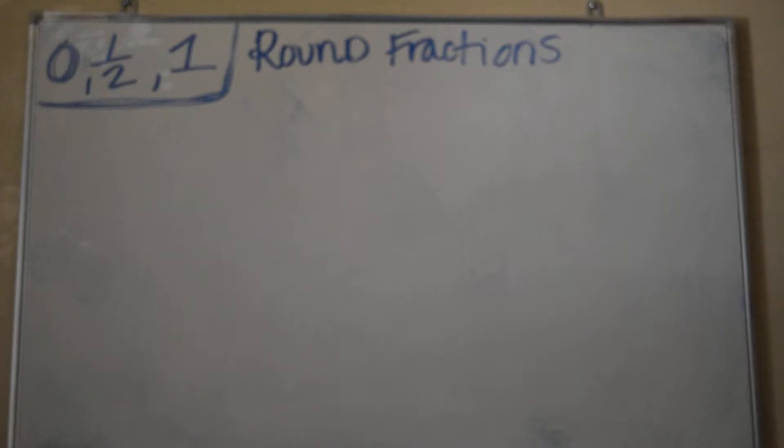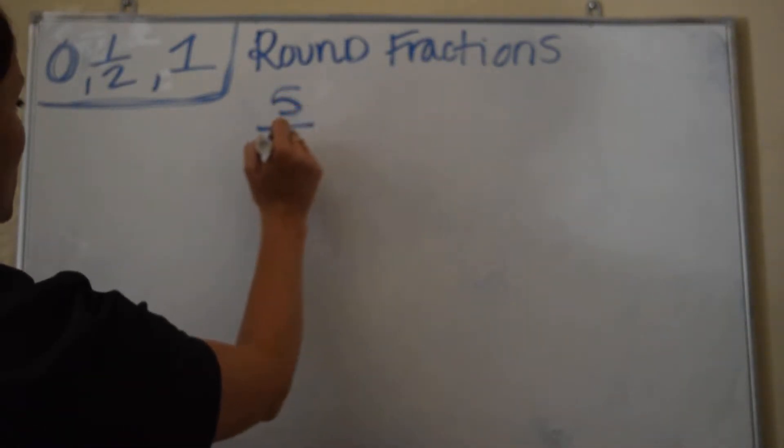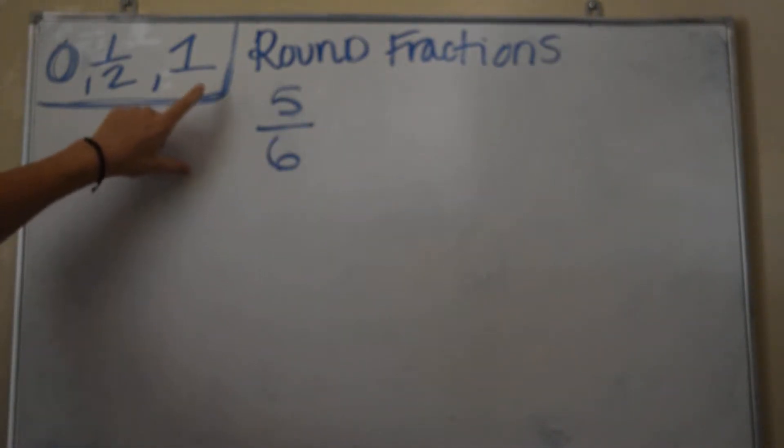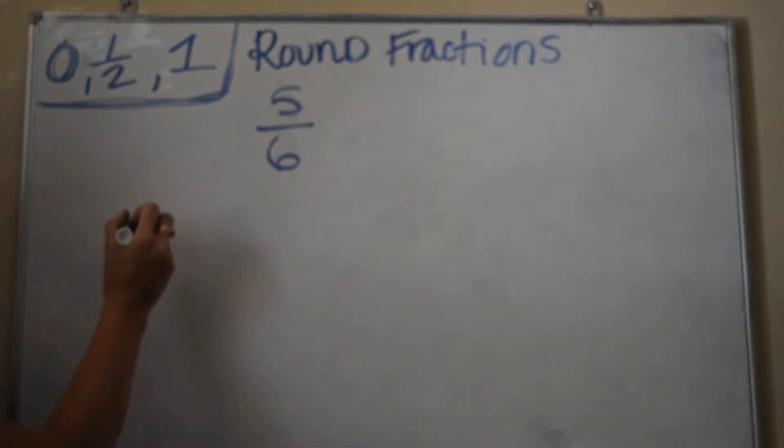So let's say we have the following fraction, 5/6, and they say rounded. So what you're rounding it to is you're going to say 5/6 is closer to 1, closer to a half, or closer to a zero. How do we figure that out?